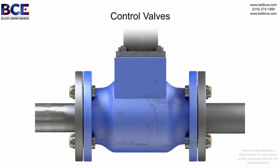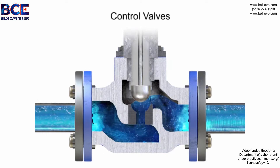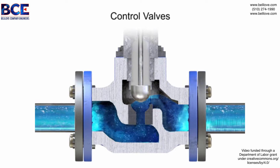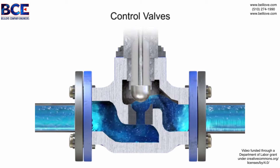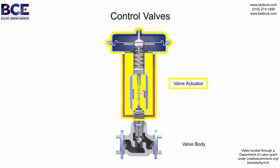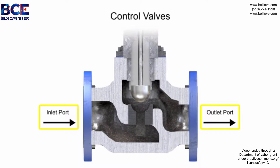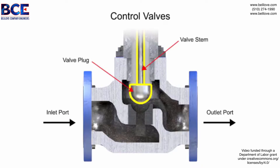Control valve actuators control fluid in a pipe by varying the orifice size through which the fluid flows. Control valves contain two major components: the valve body and the valve actuator. The valve body provides the fluid connections and a movable restrictor comprised of a valve stem and plug that is in contact with the fluid and varies the flow.